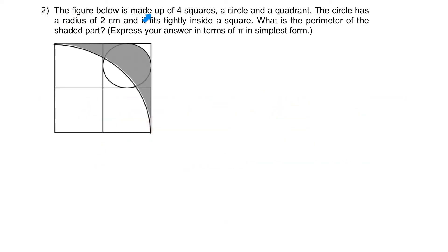The figure below is made up of four squares, a circle, and a quadrant. The circle has a radius of 2 cm and it fits tightly inside the square. If it's 2 cm, we know that the diameter will be 4 cm, which happens to be the length of one square.